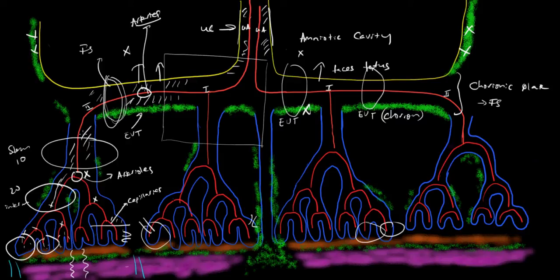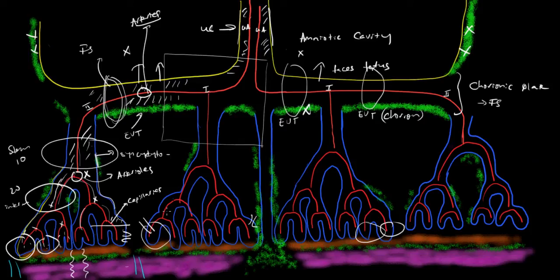We've discussed the arteries coming down and branching into smaller and smaller arteries. What delimits the villi at their external aspect is a layer called the syncytiotrophoblastic layer. It's a fusion of the syncytiotrophoblast and cytotrophoblast, which fuse together to form a single common layer — that's the outer limit of the villi, and the layer at which gas exchange occurs with the maternal circulation. Running along and external to the syncytiotrophoblast, we also see occasional clusters of extravillous trophoblasts, very similar to the chorion.